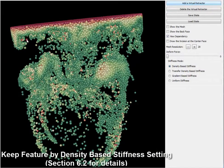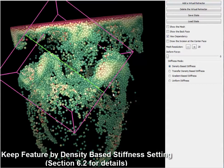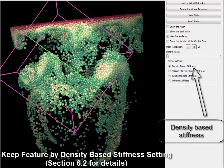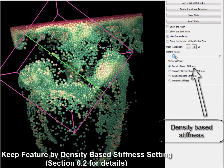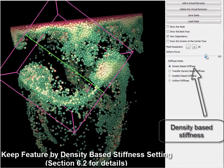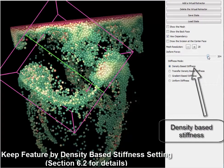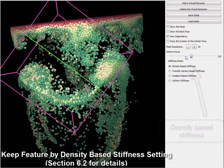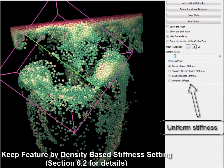Now we demonstrate how our deformation keeps feature shapes by using its density-based stiffness settings. First, we use the density-based stiffness and add a small force on the mesh. Then we increase the force. Next, we change to the uniform stiffness to compare.